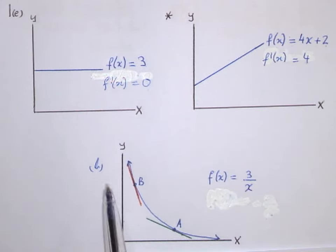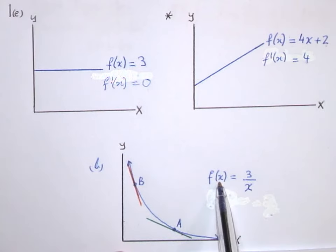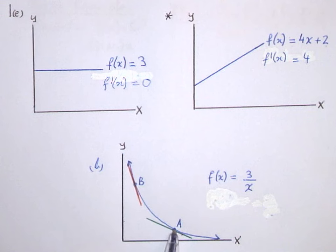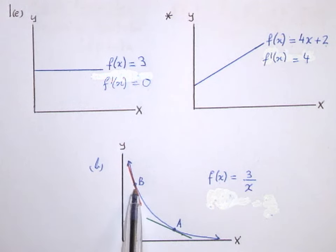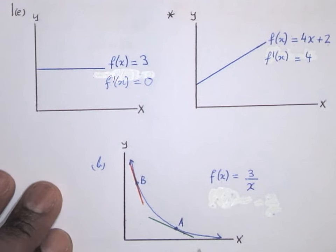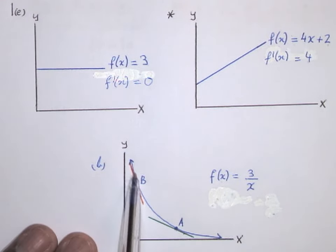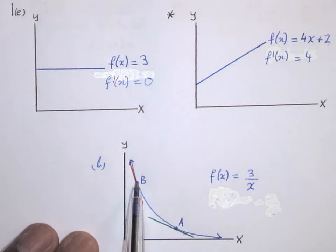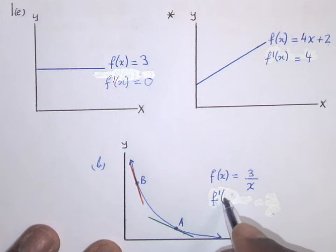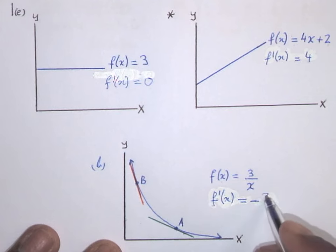However, when you look back at part b of your work, the equation was f(x) equals 3 over x — a hyperbola. You can see that the steepness at point A is not the same as the steepness at point B. The steepness of the function depends on the value of x. Therefore, the gradient at point A equals the gradient of the tangent at point A, and likewise at point B. That is why, when you did part B, your answer for the gradient was negative 3 over x squared.